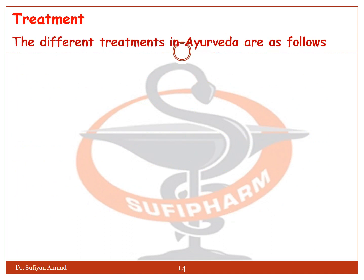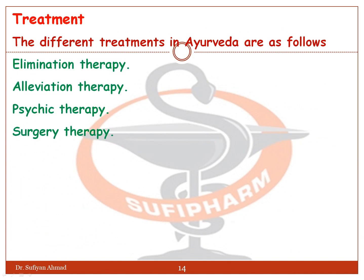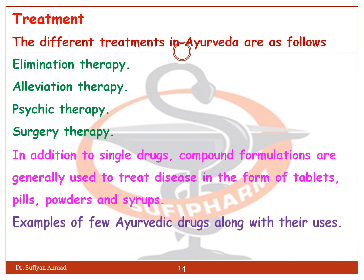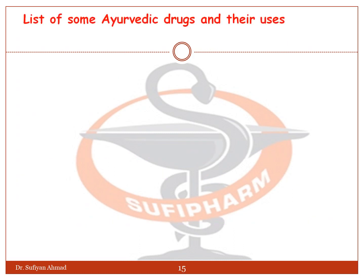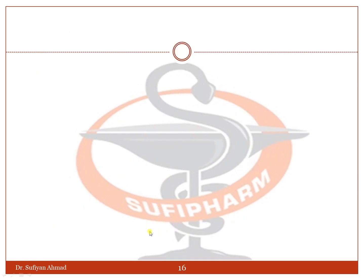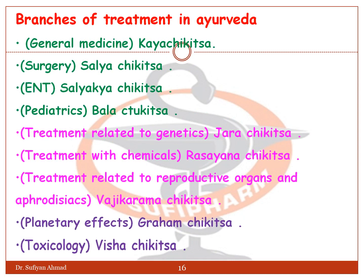The different treatments in Ayurveda are: elimination therapy, alleviation therapy, psychic therapy, and surgery therapy. In addition, single drug and compound formulations are generally used to treat disease in the form of tablet, pills, powder, and syrup. There are examples of Ayurvedic drugs along with their uses. The branches of treatment in Ayurveda include general medicine, surgery, ENT, pediatrics (Bala), treatment related to genetics, treatment with chemicals, treatment related to reproductive organs, planetary effects, and toxicology.